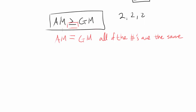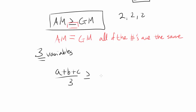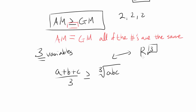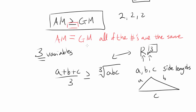Let me write AM-GM for three variables: (a + b + c)/3 ≥ ∛(abc). I'm using three variables because we have a triangle. You might already see that we want to maximize R·r³, and cubing this expression could bring that cube about. We'll let a, b, and c be the side lengths of the triangle, then relate abc and a+b+c to capital R and lowercase r.